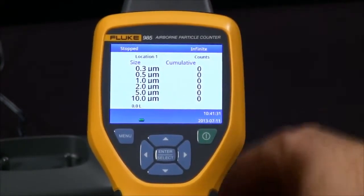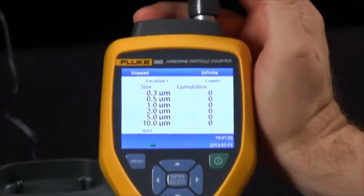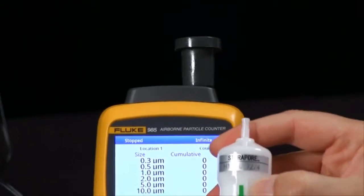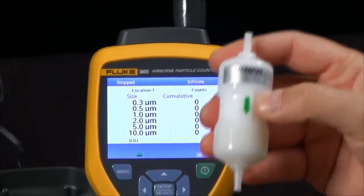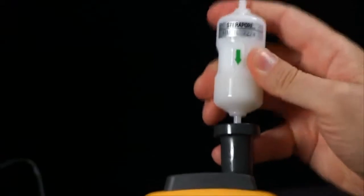To establish a baseline, we provide an adapter which goes over the sample port and a zero pass filter. You will see the direction of airflow is indicated by the green arrow. Simply insert this into the adapter.